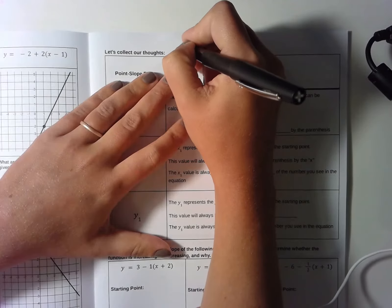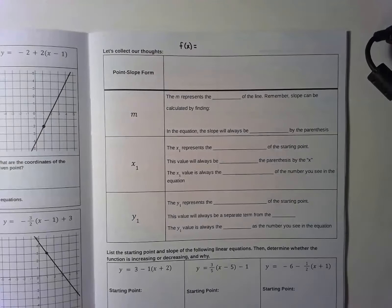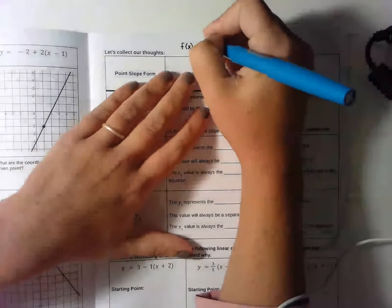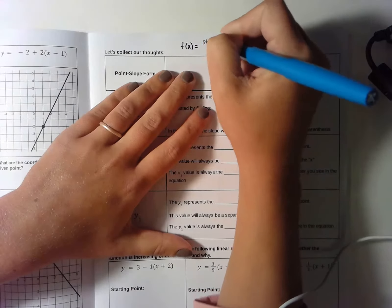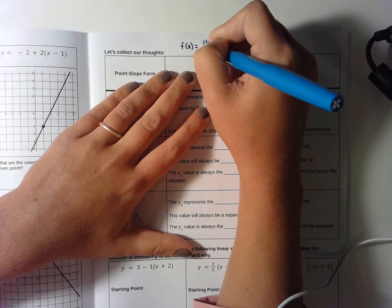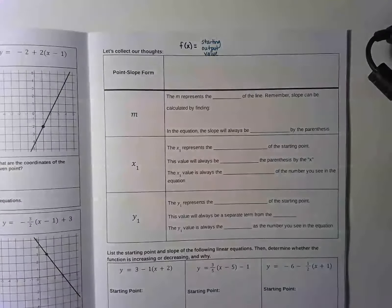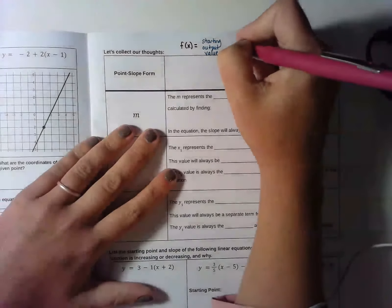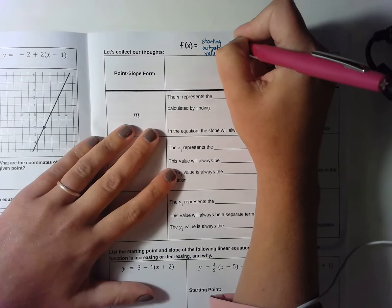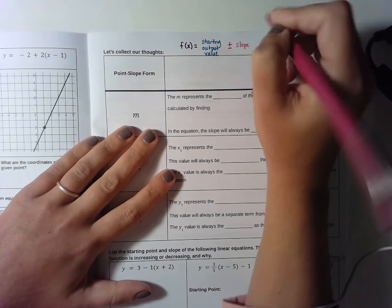In the past when we've looked at equations of lines, we've often said that the equation of a line looks like this. It usually starts with f of x equals — it could also start with the letter y, and that would be the same thing. Then we usually say that the first number in the equation is the starting output value. After you have the starting output value, you're usually going to see a plus or a minus, depending on whether the pattern is adding or subtracting.